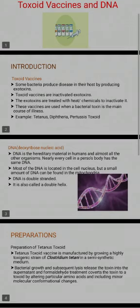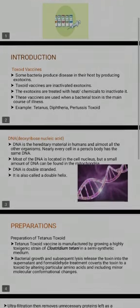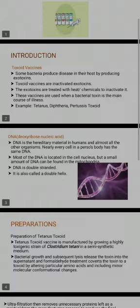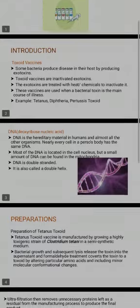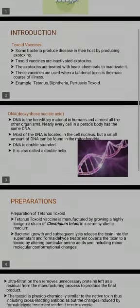Examples of toxoid vaccines include Tetanus, Diphtheria, and Pertussis Toxoid.